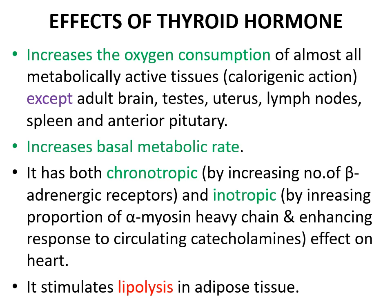Genes for alpha-myosin heavy chain, sarcoplasmic reticulum calcium ATPase, beta-adrenergic receptors, G-proteins, sodium-potassium ATPase, and certain potassium channels are enhanced. Whereas genes for beta-myosin heavy chain, phospholamban, two types of adenyl cyclase, T3 nuclear receptor, and sodium-calcium exchanger are inhibited. The net result is increased heart rate and force of contraction.